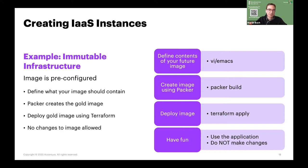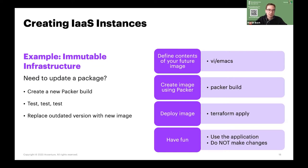With mutable infrastructure, you would create the virtual machine using Terraform apply — that's the command — which converts your code into infrastructure in the cloud. Once done, you run the Ansible playbook and can SSH into the virtual machines, which is allowed with mutable infrastructure. For immutable infrastructure, you define the contents of your future image using an editor, run Packer to build the artifact, then use Terraform apply to deploy the image Packer created. You do not make changes to the deployed image.